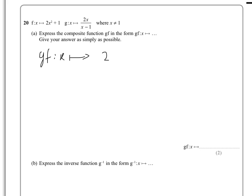So look at that g function, it's 2x, but now x has to be replaced by that function f, so it's 2x squared plus 1, and that is over 2x squared plus 1 minus 1.